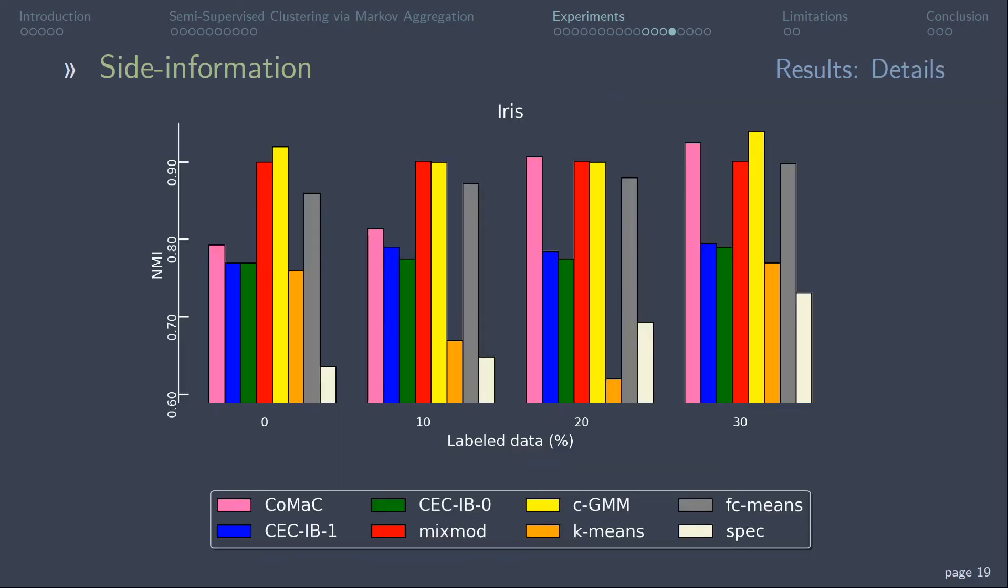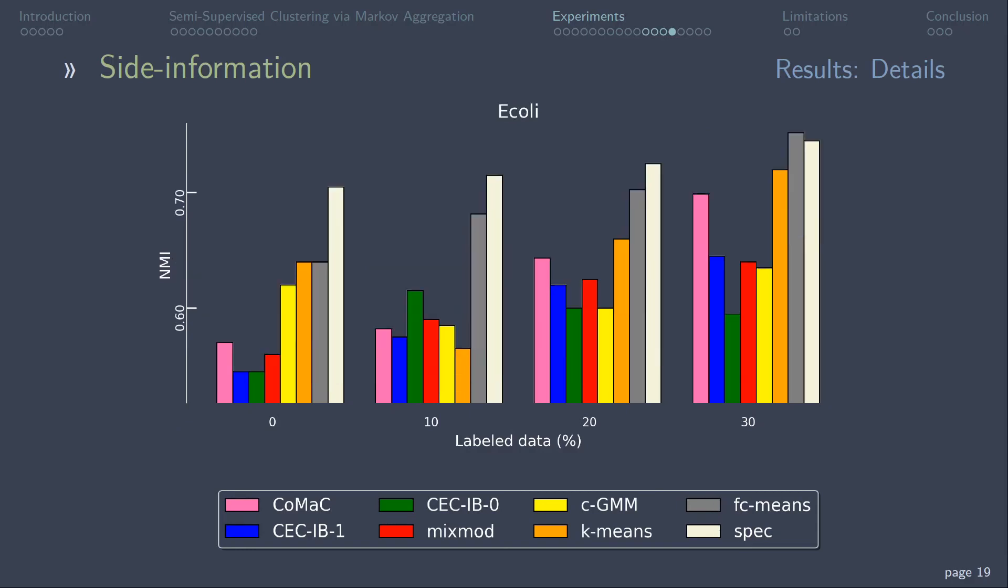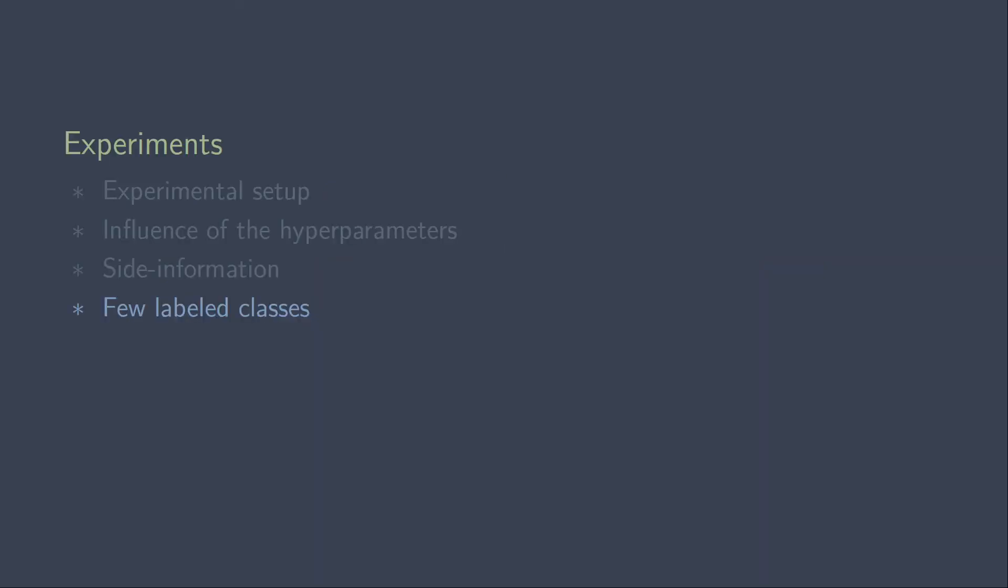On the iris dataset, only 20% of labeled data points noticeably improve the accuracy of COMAC, while the other techniques do not benefit as much from additional side information. Also, on the glass dataset, the increased accuracy is obvious. On the E. coli dataset, the performance is not superior, but again, the accuracy increases a lot for more pairwise constraints.